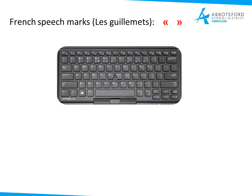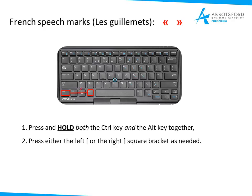To do the guillemets or French speech marks, those are your square brackets just above the apostrophe key. This one's the only one that requires a key combination. Press and hold both the Control and Alt keys together, then select the left or the right square bracket depending on which guillemet you need. So it's Control+Alt, hold those down, then select the left or right guillemet, whichever you need.